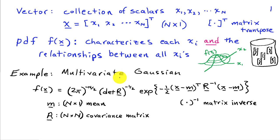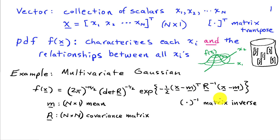Perhaps the most widely used multivariate probability density function is the multivariate Gaussian. The PDF can be expressed with a scale factor up front, then the determinant of R — the n-by-n covariance matrix — to the negative one-half power, times the exponent of negative one-half times (x minus the mean) transpose times the inverse of the covariance matrix times (x minus the mean). This is a row vector times a matrix times a column vector, giving a scalar in the exponent. M is the mean, and the superscript minus-1 denotes matrix inverse. As with the scalar case, we don't always need to work with the full PDF.